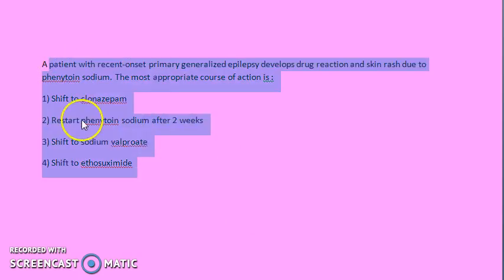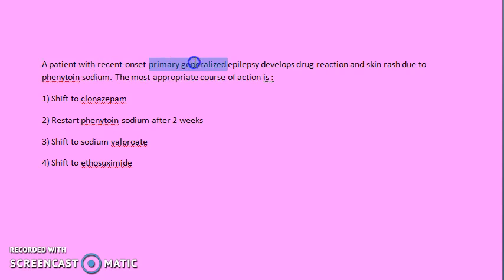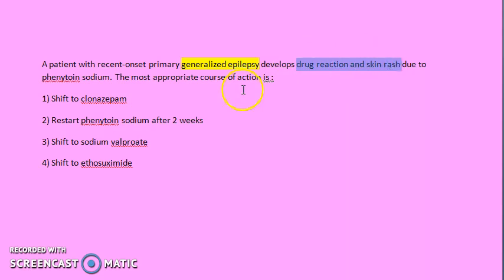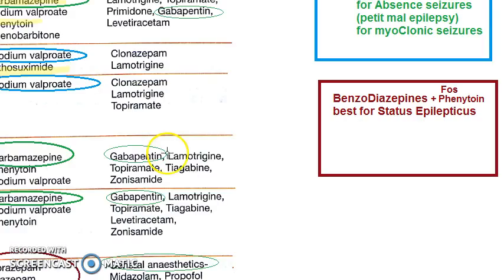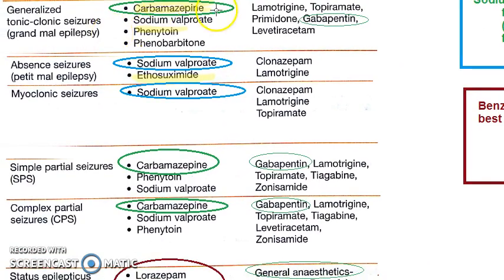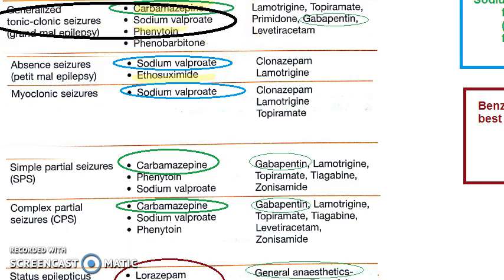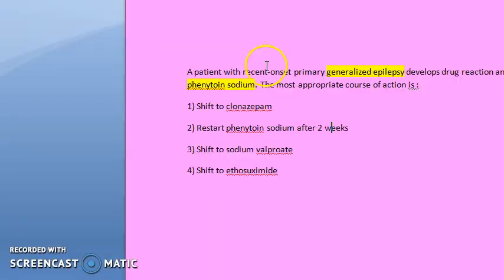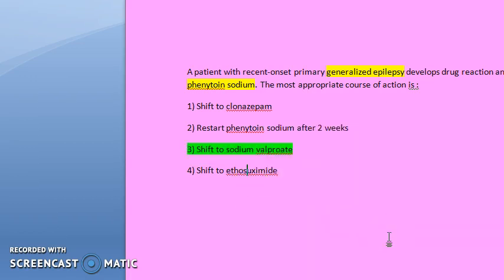MCQ on anti-epilepsy drugs. First question: a patient with recent onset primary generalized epilepsy has a drug reaction and skin rash — a hypersensitivity reaction to phenytoin sodium. For generalized epilepsy we can give carbamazepine, sodium valproate, phenytoin, or phenobarbitone. Since phenytoin is causing an adverse effect and carbamazepine is not among the options, the answer is to shift to sodium valproate.